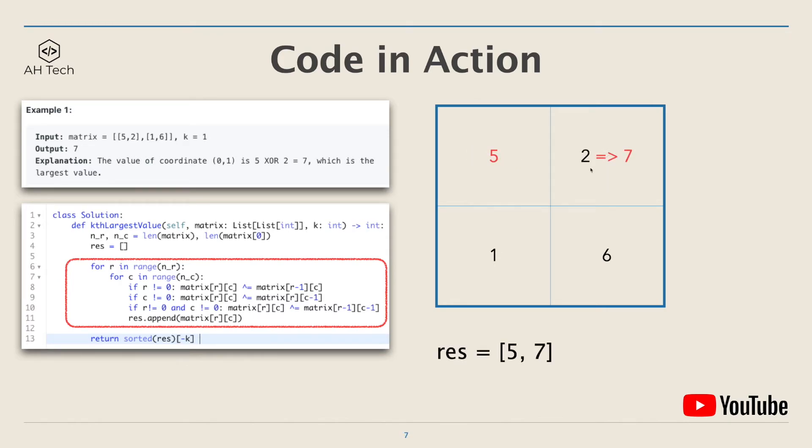The second cell: the coordinate value will be 5 XOR 2, which is 7, and we will append 7 to the res array.